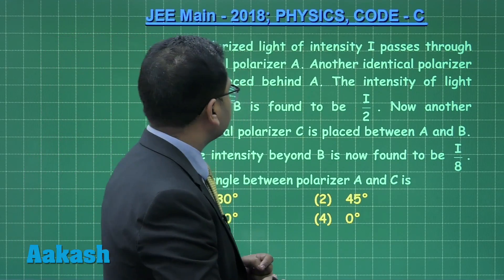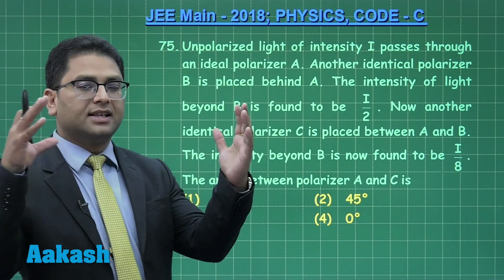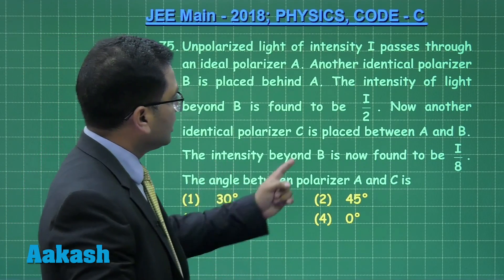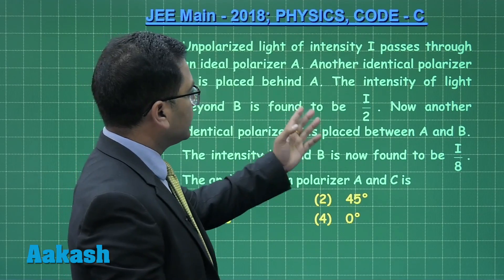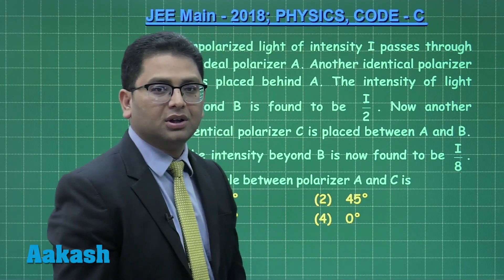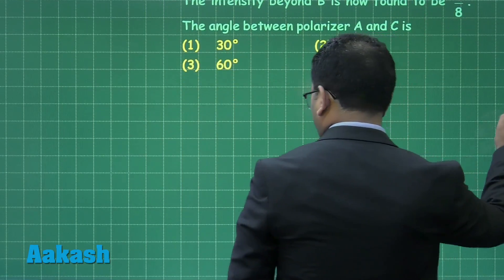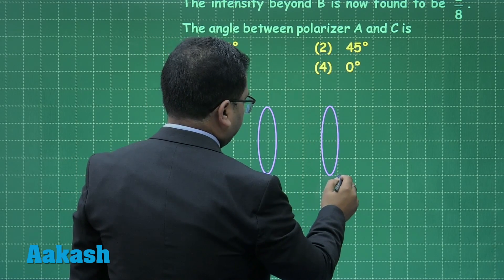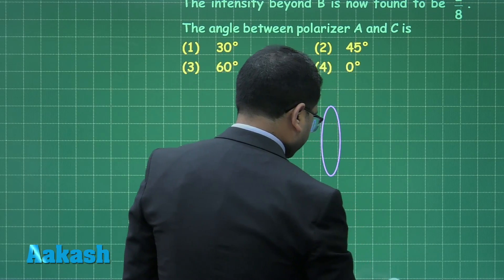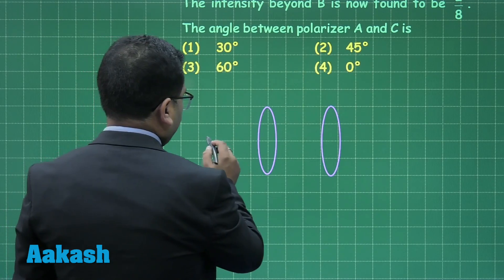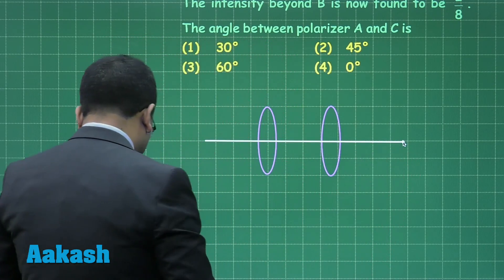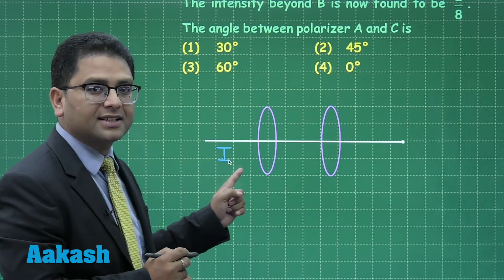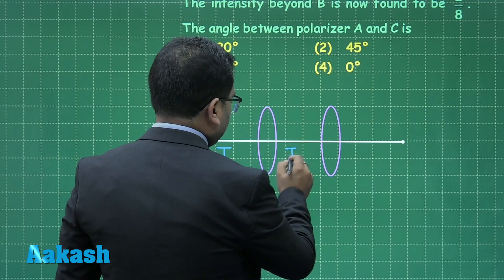Now let's see what it is. Unpolarized light of intensity I passes through an ideal polarizer A. There is an ideal polarizer and unpolarized light passes, and we know the light which is transmitted will have half the intensity I by 2. That's a fact. Another identical polarizer B is placed behind A, and the intensity of light beyond B is found to be I by 2.